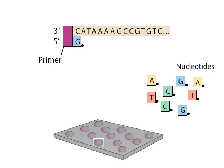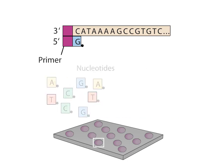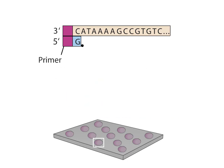The added guanine-bearing nucleotide is complementary to the cytosine-bearing nucleotide in the template DNA. Note that the nucleotides have a blocking group on their 3' ends, so no additional nucleotides can be added at this time. The rest of the nucleotides are washed away. A laser induces the nucleotide to fluoresce, and the color is recorded.